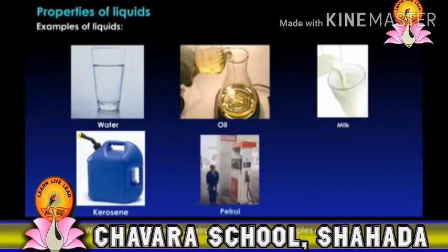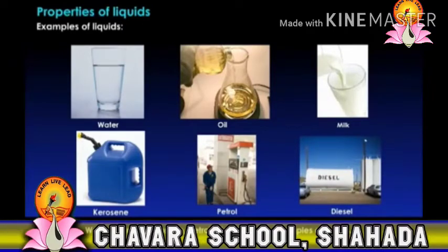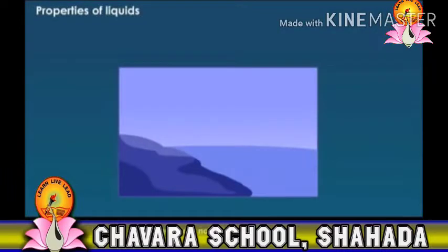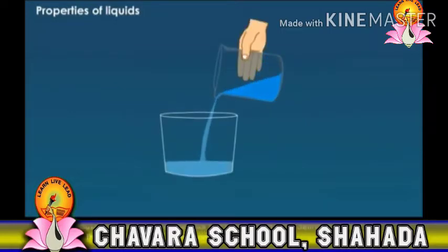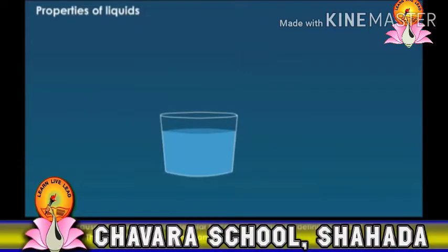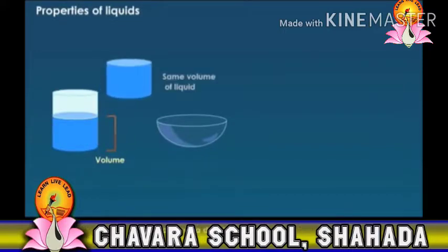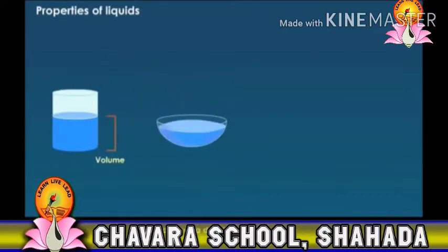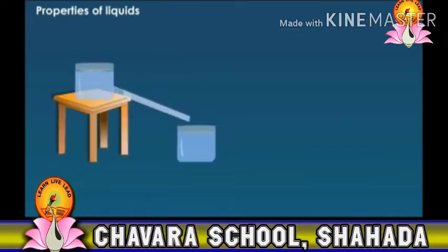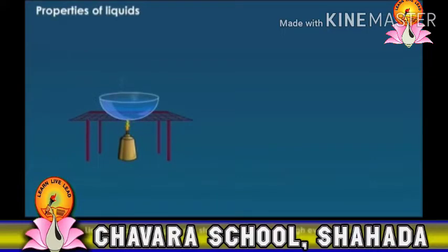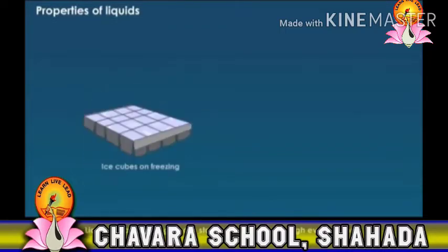Examples of liquid: water, oil, milk, kerosene, petrol, diesel. These are the examples of liquid. Liquids are not rigid. Because of the weak intermolecular force, liquids have no definite shape of their own — they take the shape of the container. Liquids have a definite volume. Liquids can flow from a higher to a lower level. Liquids change into gaseous state upon heating, and this process is called evaporation.